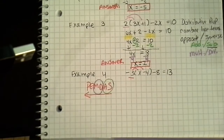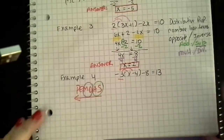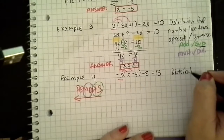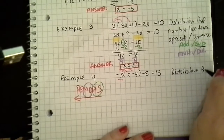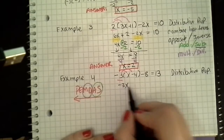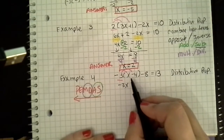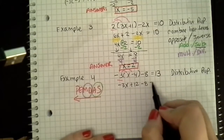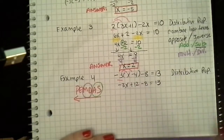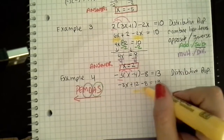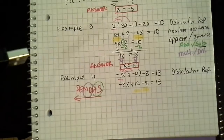So negative 3 times x is a negative 3x. A negative times a negative, remember, is a positive 12. Minus 8 equals 13. I'm going to scan for any like terms. And it turns out that I do — I have the 12 and the negative 8. Those are like terms. So my next step is to combine like terms.